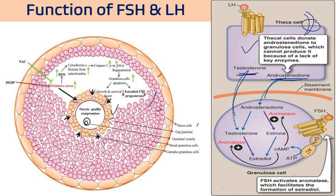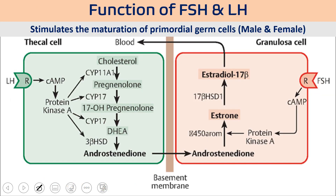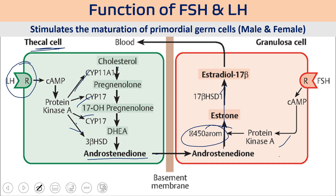In the granulosa cells, FSH activates the aromatase enzyme, which converts testosterone and androstenedione into estrogen. This estrogen then regulates aromatase enzyme activity or works for the production of other hormones. In summary: theca cells have LH receptors which activate enzymes converting cholesterol to androstenedione; this moves to granulosa cells where FSH activates aromatase via protein kinase A, converting androstenedione to estradiol, which is then released into blood circulation.